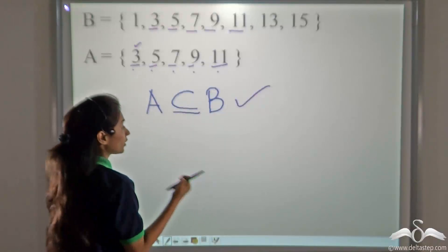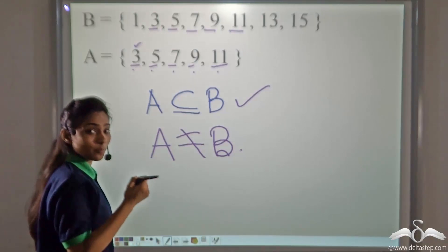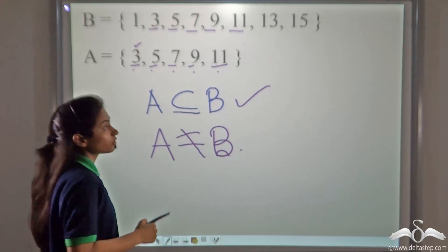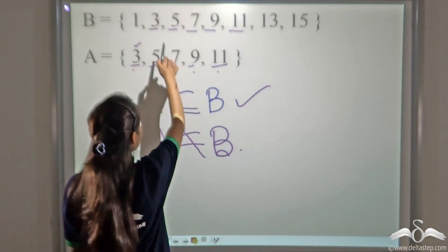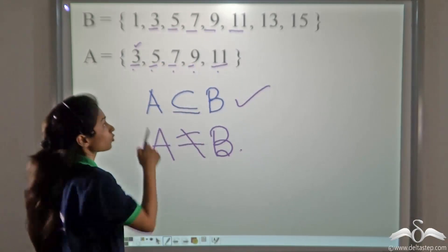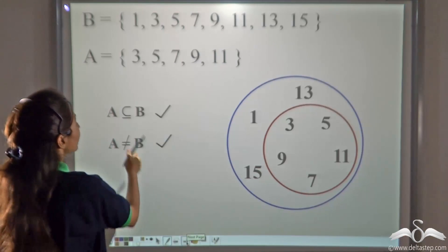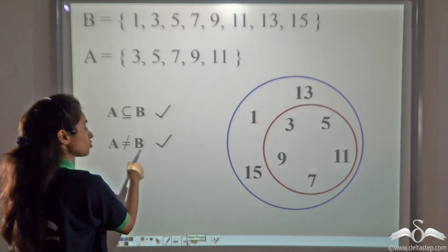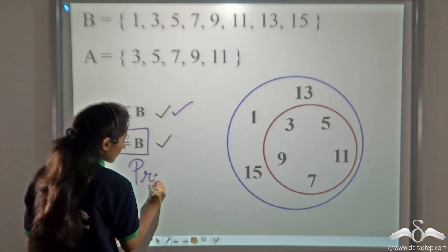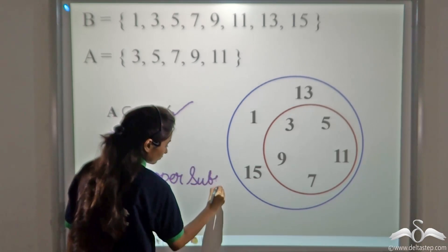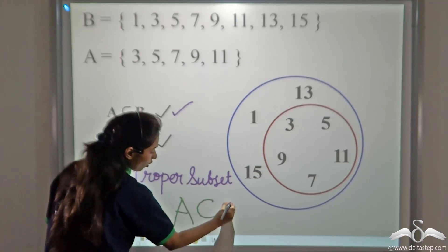Now we check the second condition: A should not be equal to B. All the elements of A are in B, but not all elements of B are in A, so both sets are not equal. This condition is also fulfilled. So A is a subset of B and A is not equal to B — therefore A is a proper subset of B. We write it as A is a proper subset of B using the proper subset symbol.